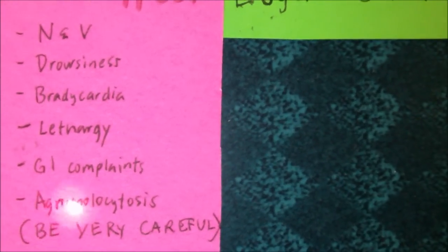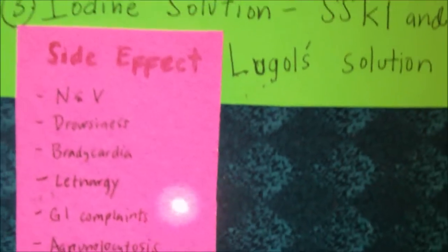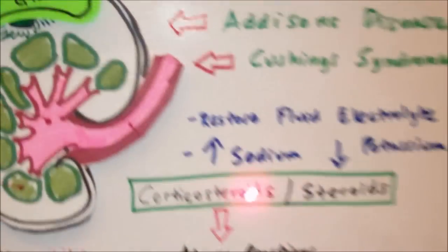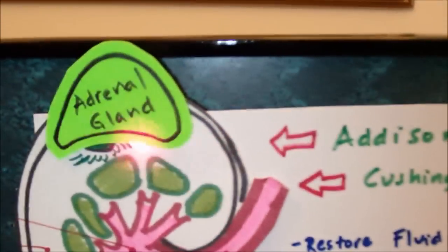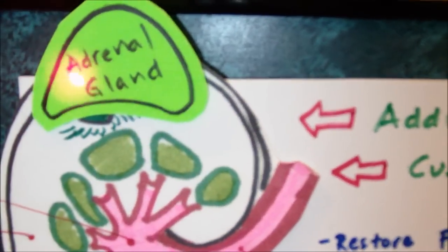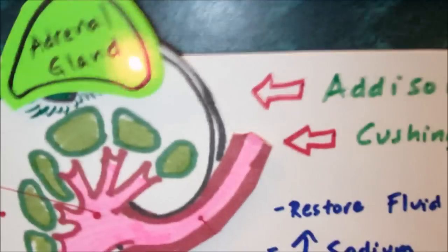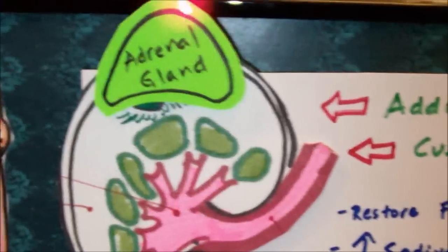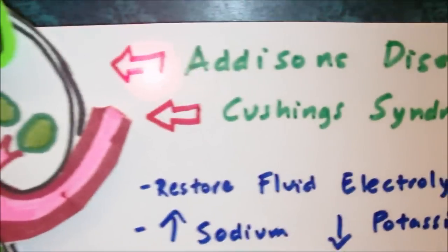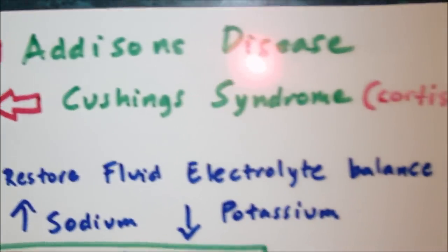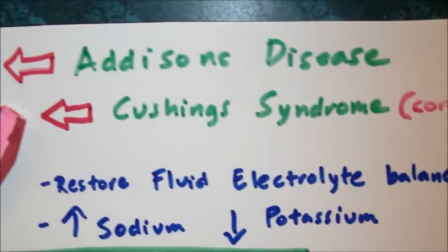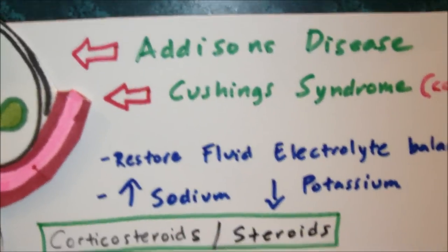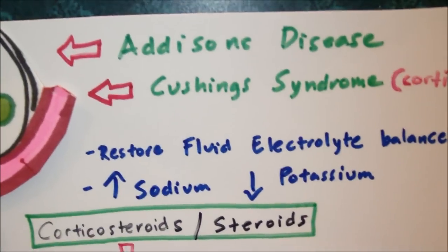Let's talk about the adrenal gland and the two most common diseases of the adrenal gland and how we are going to treat those diseases. The first one is Addison's disease — it's basically an inadequate amount of glucocorticoids and mineralocorticoids in the body.